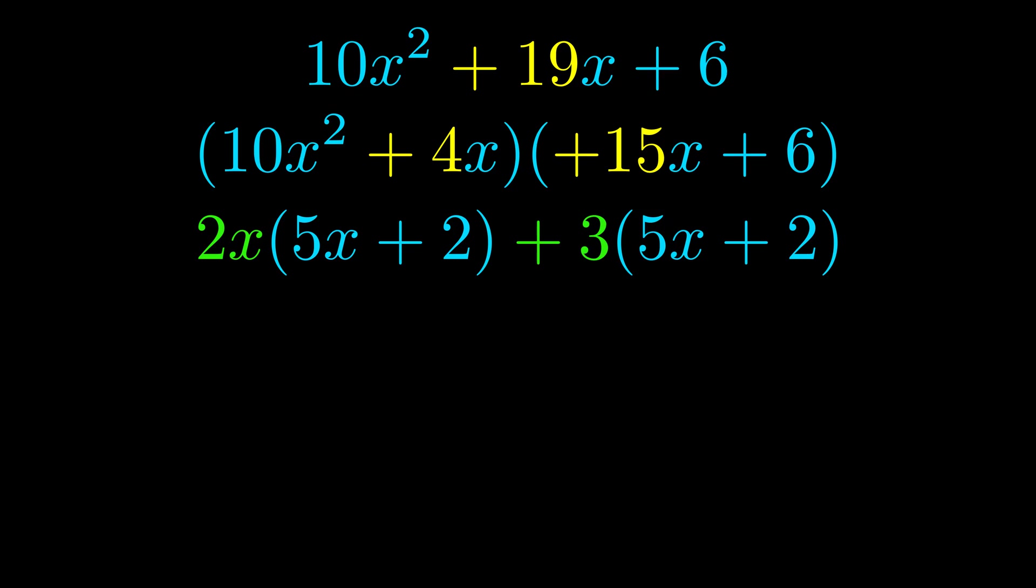Notice also how what remains inside of the parentheses is the same in both cases. The blue values are the same. Those blue values will become one of our factors and we will combine the two green values, the GCFs that we pulled out, to get the other one. And that is our fully factored equation.